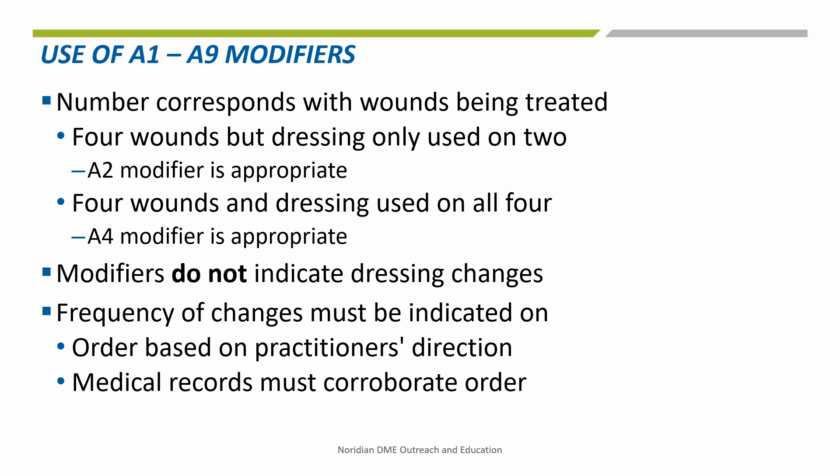Dressings for surgical or debrided wounds must include one of the A1 through A9 informational modifiers. The correct modifier to use is the number that corresponds to the number of wounds the dressing will be used for, not the number of wounds the beneficiary has. For example, if the beneficiary has four wounds but a particular dressing is only used on two of them, the A2 modifier would be used with that code. If the dressing is being used on all four wounds, the A4 modifier would be appropriate.